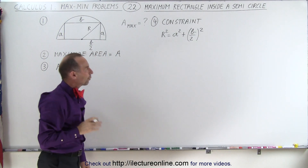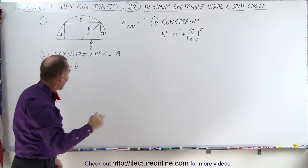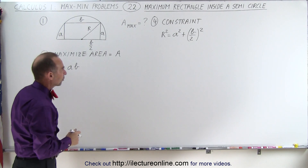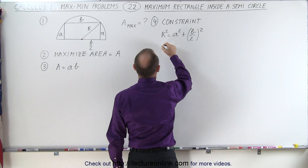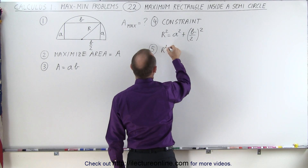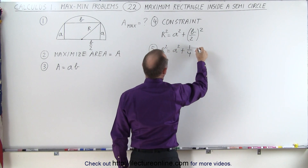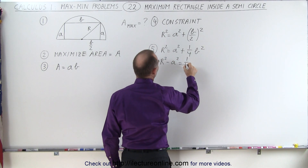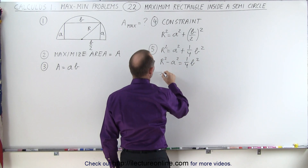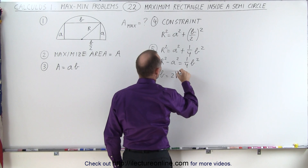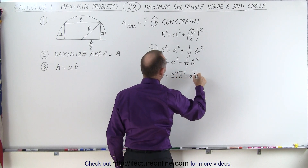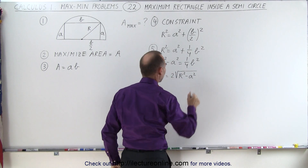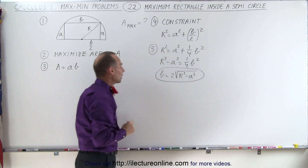This means I can solve this equation for one of the variables in terms of the other. I'll solve for B. We have R squared equals A squared plus one-quarter B squared, so R squared minus A squared equals one-quarter B squared. Therefore, B equals 2 times the square root of R squared minus A squared. The square root of 4 is 2, so that gives the relationship between B and A.